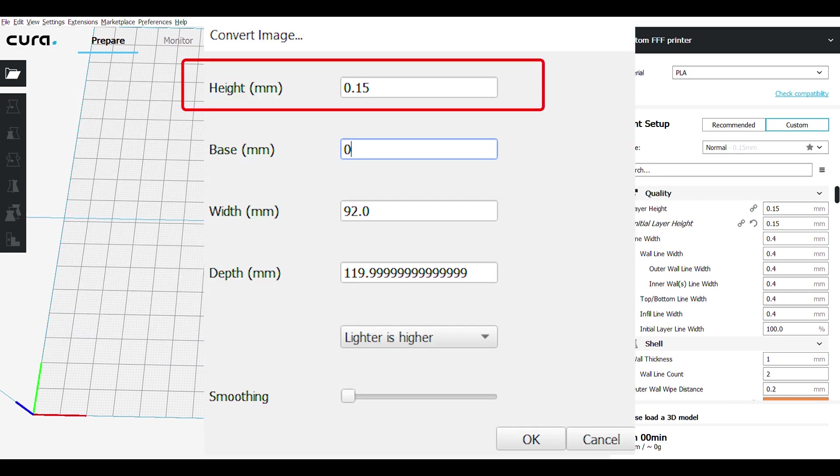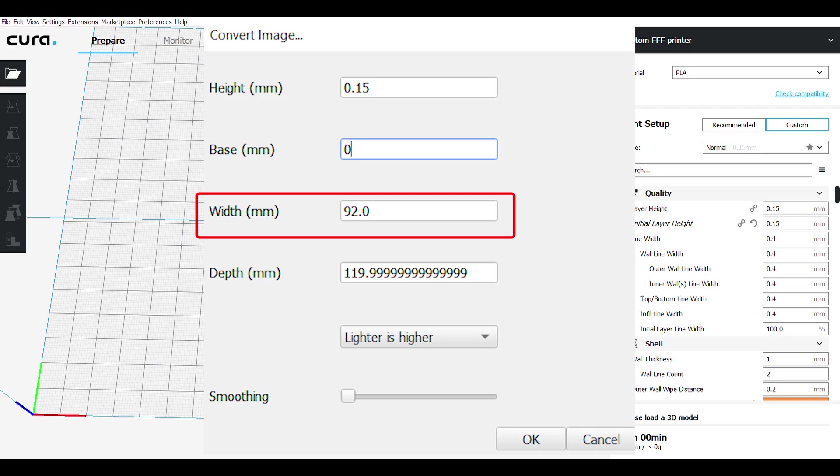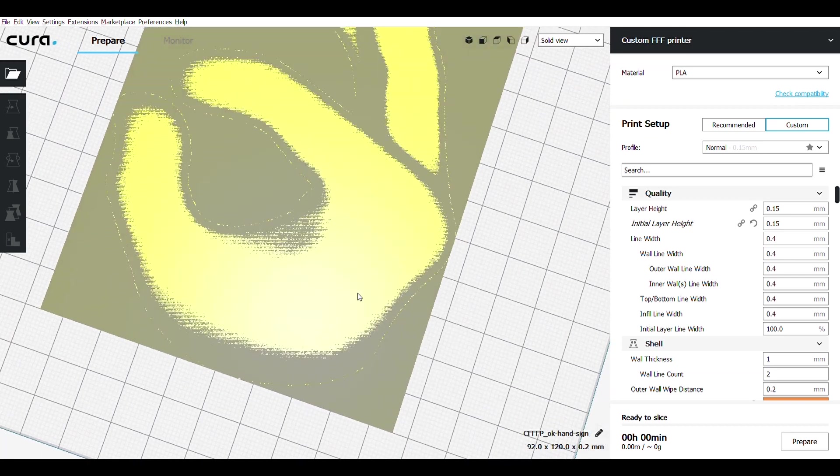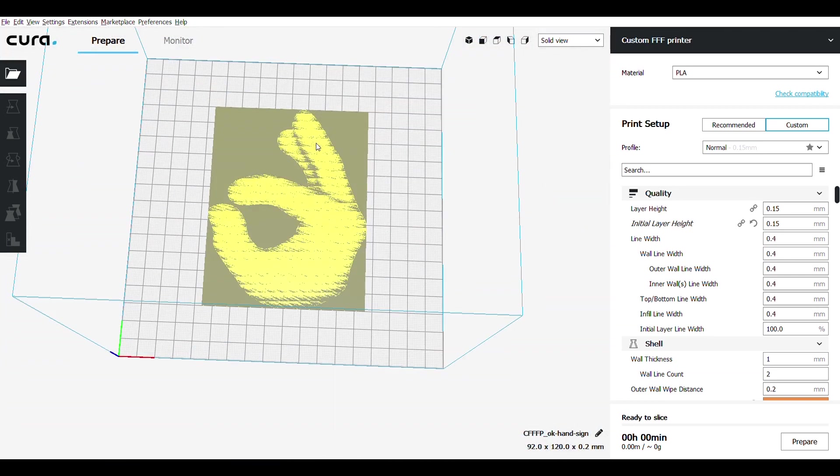The height should be the same as your layer height. The base should be at zero. Width and depth is whatever you want it to be like physically in size. So you see now there's like a mesh and you can see the actual shape. So now let's slice this.